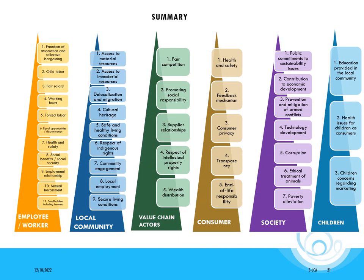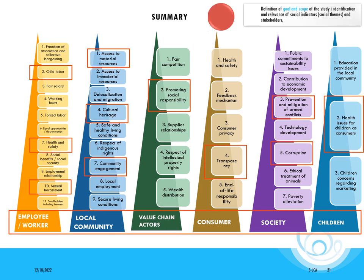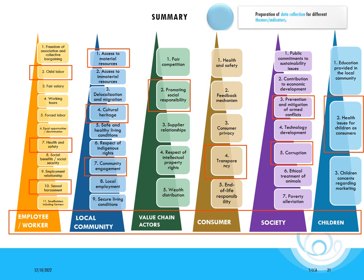To summarize, you can see here all of the different indicators included for the different stakeholder groups. As a first step for Social LCAs, we need to identify the different hotspots in terms of indicators that might be of interest for a given study. Then, as a second step, we need to prepare the data collection process — which means preparing surveys, for instance, that might help us get the information needed to evaluate all of these different indicators.